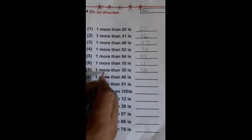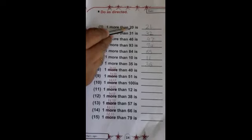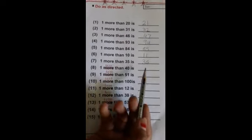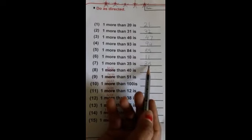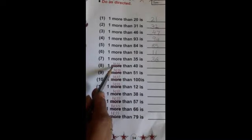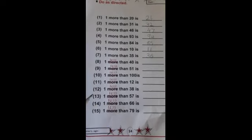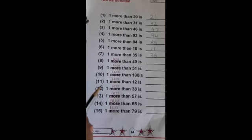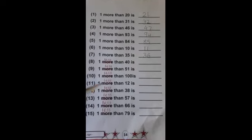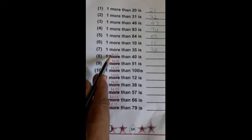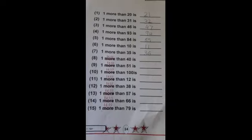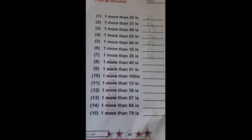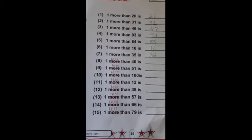So you can see all these numbers — jo number diya gaya hai us number ka after number mila humein. Matlab kisi bhi number mein agar hum one more karte hain, ek aur add karte hain, to humein after number milta hai. Now there was a printing mistake — 'more' ko cut karke 'less' likh do.